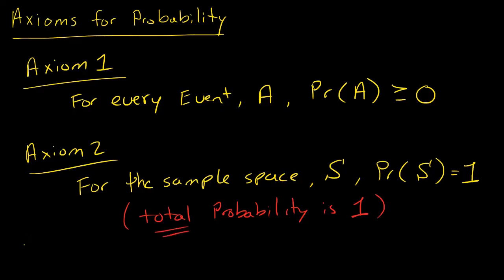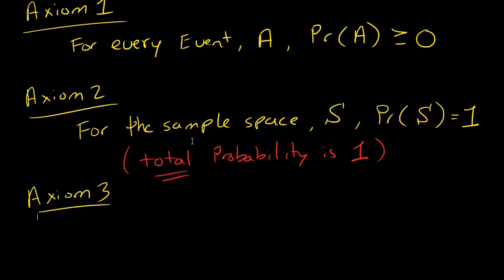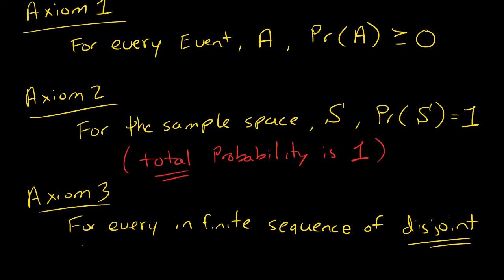And then lastly axiom three. Axiom three has to do with disjoint events if we were to take their union. For every infinite sequence of disjoint - what does disjoint mean? - disjoint events.